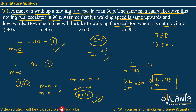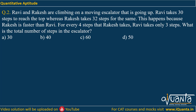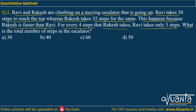I hope the concept is clear. Questions on TSD check your comprehension skills — if you comprehend well, you can easily find the answer. Moving to the second question: Ravi and Rakesh are climbing on a moving escalator going up. Ravi takes 30 steps to reach the top whereas Rakesh takes 32 steps. Rakesh is faster than Ravi — for every 4 steps Rakesh takes, Ravi takes only 3 steps. What is the total number of steps in the escalator?